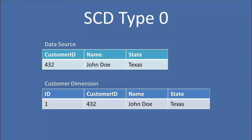Right now, the data source shows the name attribute in our dimension being John Doe and the state being Texas. So the dimension has those corresponding values for our customer ID number 432. Now, if the source system changes and reports that customer ID 432 is actually Jane Doe instead of John Doe, and Jane lives in California instead of Texas, we're actually going to do nothing to our dimension. We're going to leave that original value for all attributes, and that's an SCD type 0.